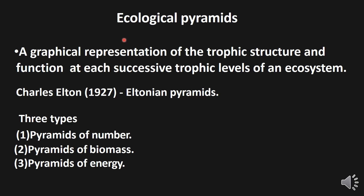Hi friends, in this video we have to learn about ecological pyramids — a graphical representation of the trophic structure and function at each successive trophic level of an ecosystem. Ecological pyramids were first introduced by Charles Elton in the year 1927, so they are also called Eltonian pyramids. There are three types: pyramids of number, pyramids of biomass, and pyramids of energy.